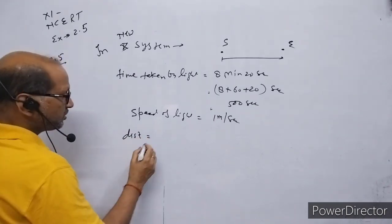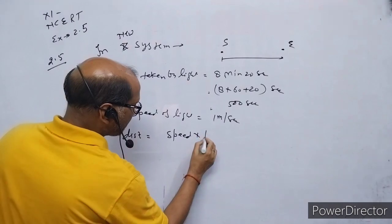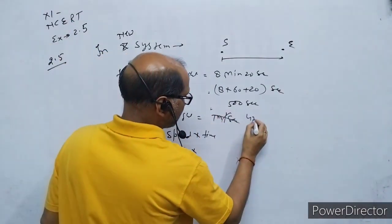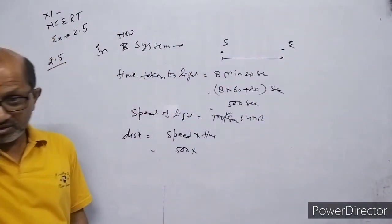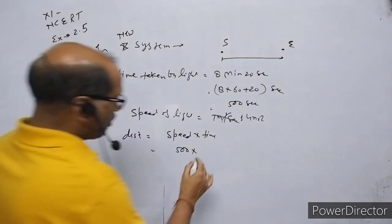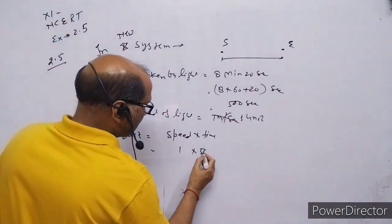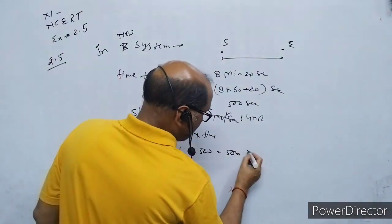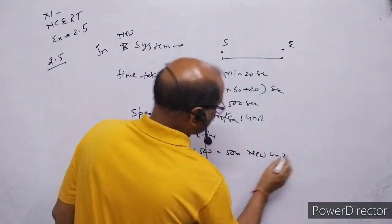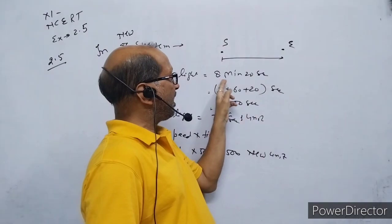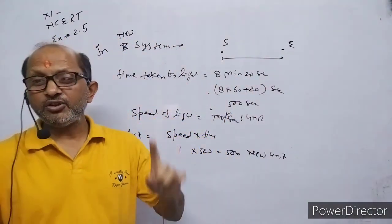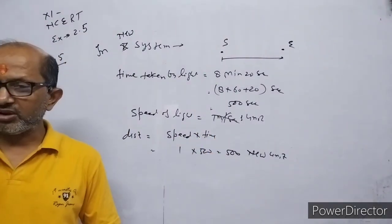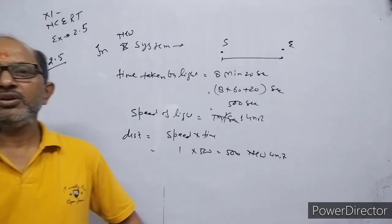Distance ka formula hai: speed into time. Speed kitni hai? One new unit. Time kitna hai? 500 seconds. To value aa gayi 500 new units. Yeh kilometer ya kuch aur nahi — new unit jo bhi ho, uski hisaab se distance 500 units hogi. Agar sun se light earth mein aane mein 8 minute 20 second laggte hain aur speed of light one new unit hai, to distance 500 new units hogi.